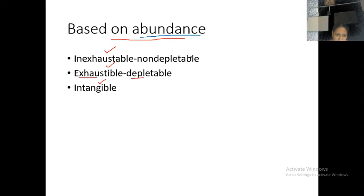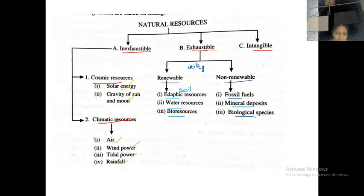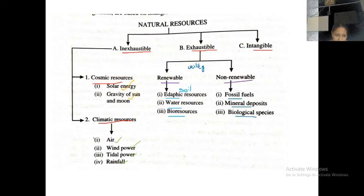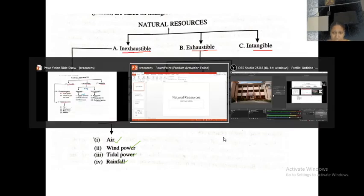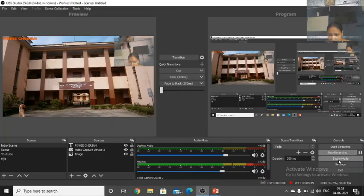We have a detailed description of inexhaustible, exhaustible, and intangible. Inexhaustible is a consumable resource and a climatic resource. Exhaustible is renewable and non-renewable. These are the key understandings of today's class, and the next class will continue with further sections.